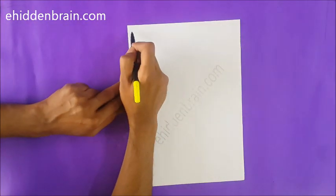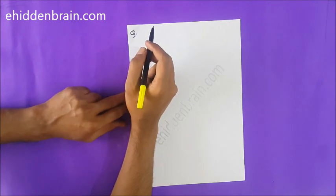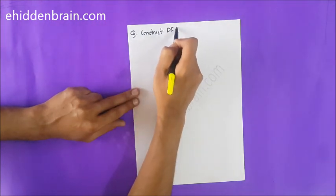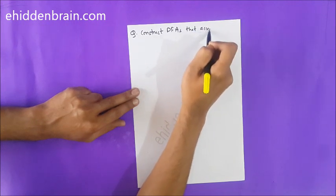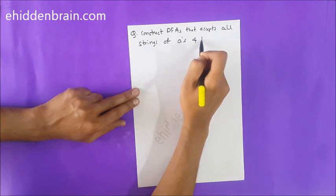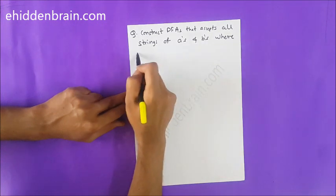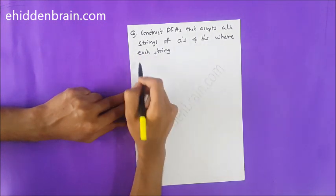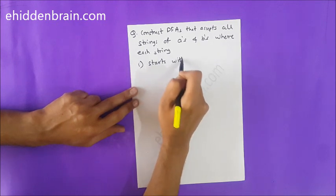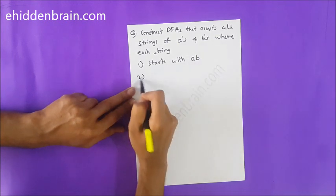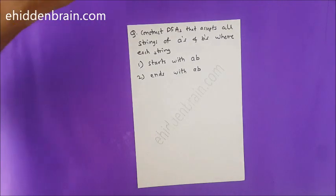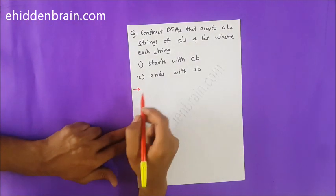Welcome to EdenBrain.com. Today we will see two questions in this topic. The first question is: construct a DFA that accepts all strings of A's and B's where each string starts with AB. The second question is: construct a DFA where each string ends with AB. These are the two questions we will be tackling in this session.